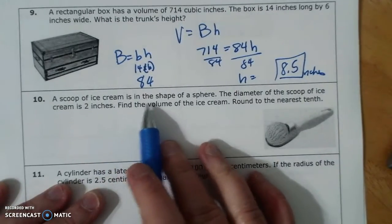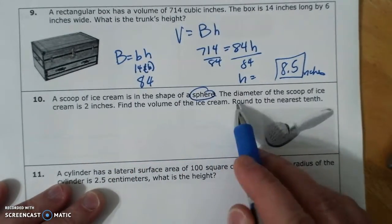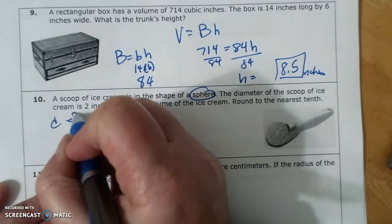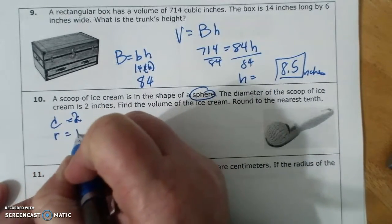A scoop of ice cream is in the shape of a sphere. Diameter is 2 inches, which means radius is 1.